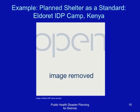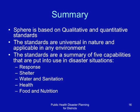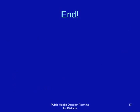This is an example of a planned shelter as a standard. In summary, SPHERE is based on qualitative and quantitative standards. The standards are universal in nature and represent a summary of five capabilities important in the management of disasters involving mass displacement of people: general response management, shelter, provisions for water and sanitation, provisions for health, and provisions for food and nutrition.